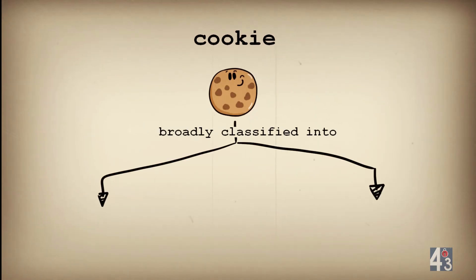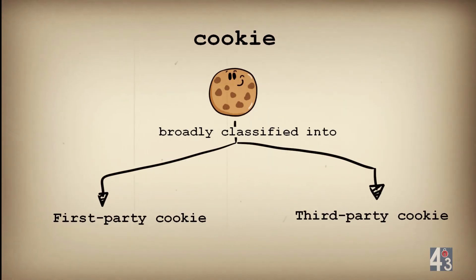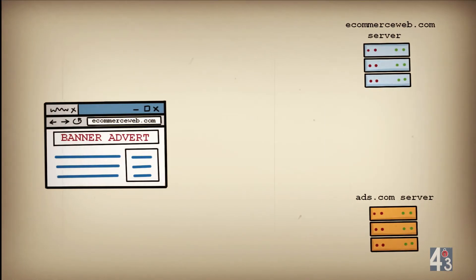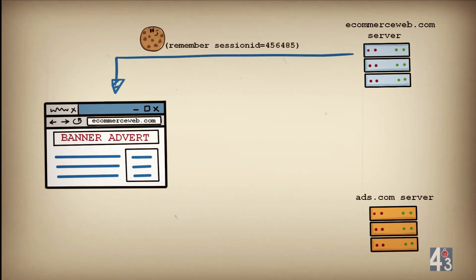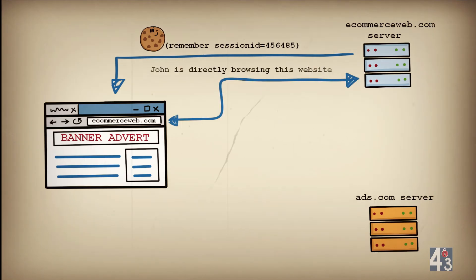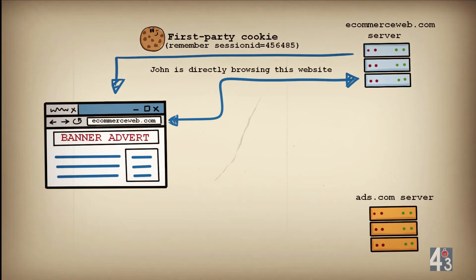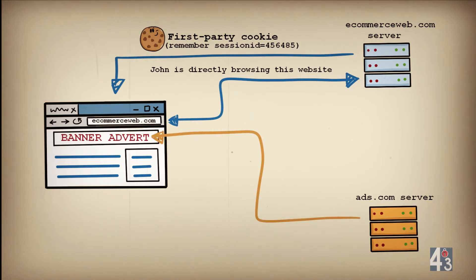Cookies can be broadly classified as first-party and third-party cookies. In the previous example, session ID 456485 was set by ecommerceweb.com for John — a cookie set by the same website John is currently browsing, hence called a first-party cookie. But what if ecommerceweb.com had ads on their webpage? Those ads, though seen on ecommerceweb.com, are being served through another server, let's say ads.com.